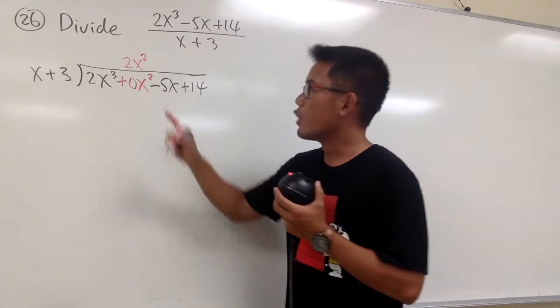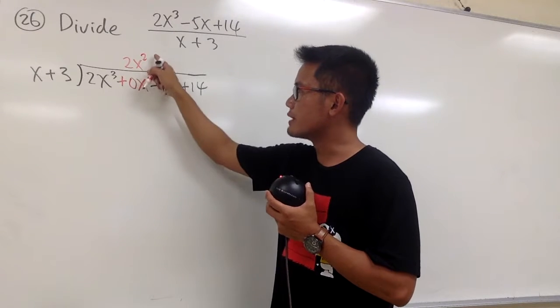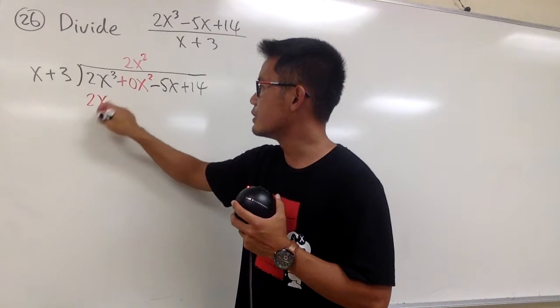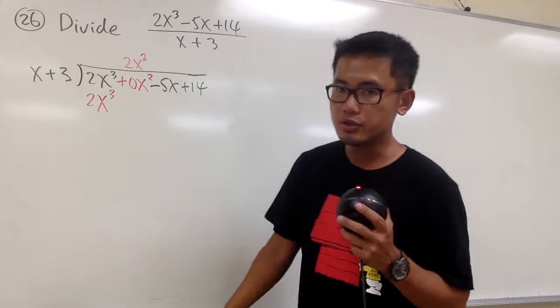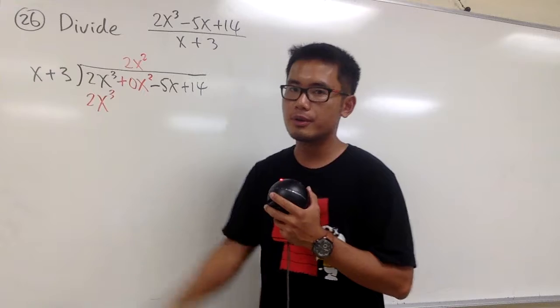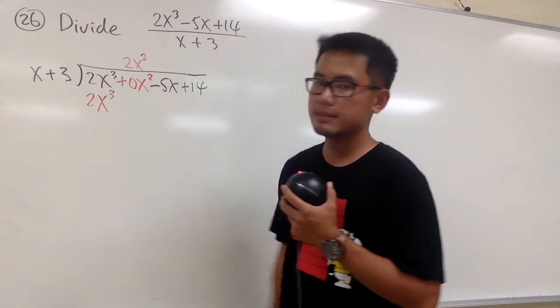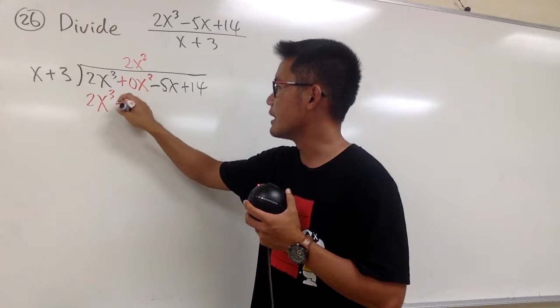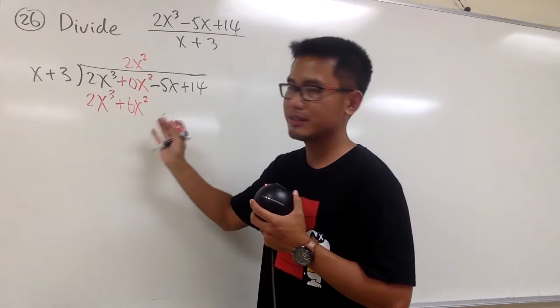And you will see, when you take this 2x to the second power times x, we will get 2x to the third power. Be sure you line them up, right, according to the power of x. And don't forget to do 2x squared times 3, which is plus 6x squared, like this.